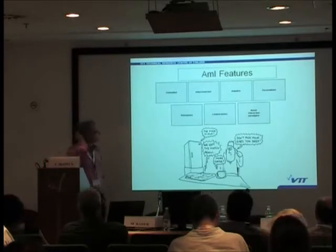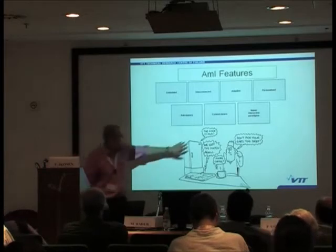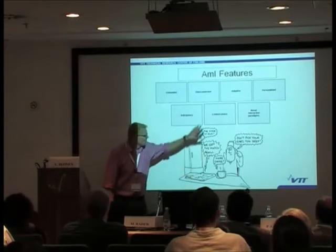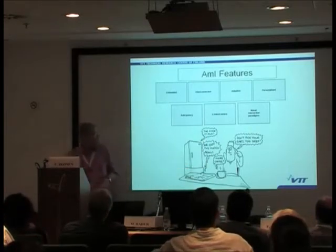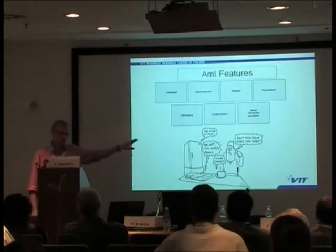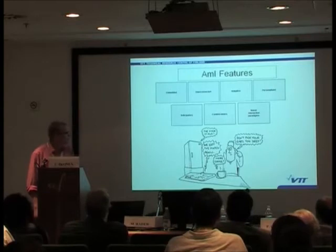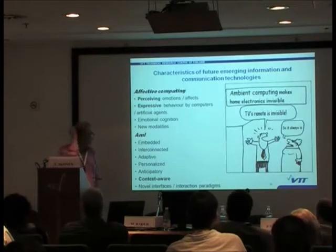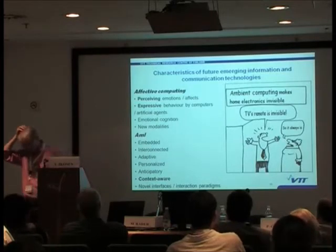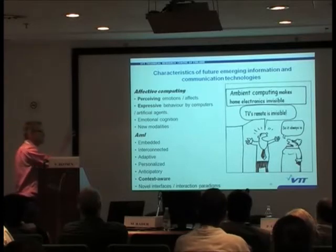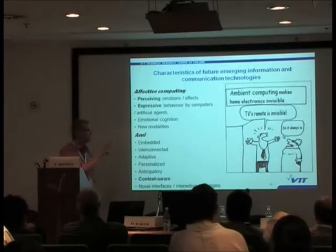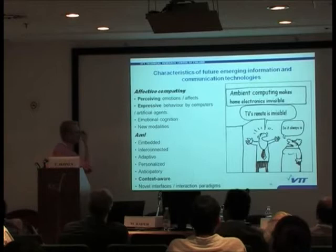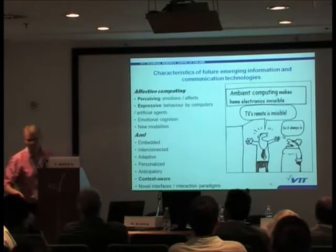This picture describes ambient intelligence: it is embedded everywhere — RFID tags, smart dots, things like that. It should be personalized, context-aware, and use novel interaction paradigms. I am not saying whether it is good or bad; these are just the features described in the discourse. We did this kind of technology description for all 11 or 12 main visions.